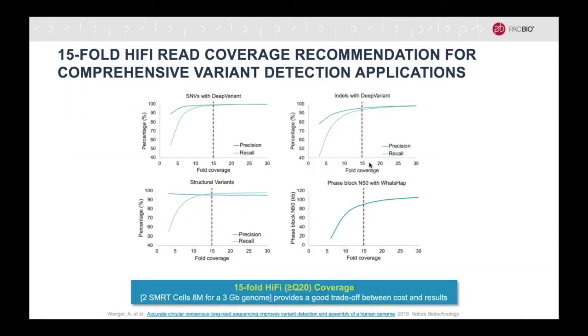The high accuracy of HiFi sequencing allows for comprehensive variant detection. At 15-fold coverage, HiFi data has both high precision and recall across different variant types.